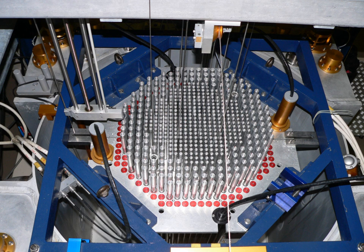Sodium-cooled fast reactor. Lead-cooled fast reactor. Gas-cooled reactors are cooled by a circulating inert gas, often helium in high temperature designs, while carbon dioxide has been used in past British and French nuclear power plants.